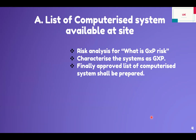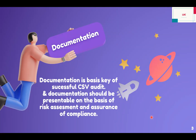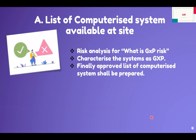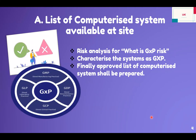So, what are the small things that should be available all the time at my site, in my organization, so that all-time readiness can be achieved — meaning I will always be ready for any inspection related to CSV? I have concluded some points that should be available so that any audit or inspection can be easily handled. First of all: a list of computerized systems available at the site.